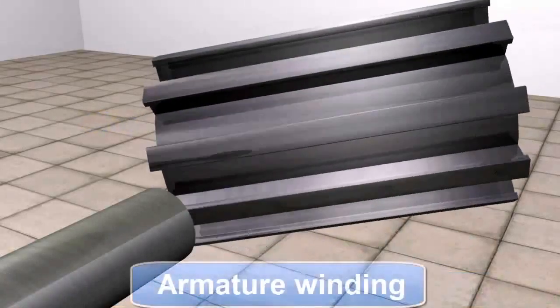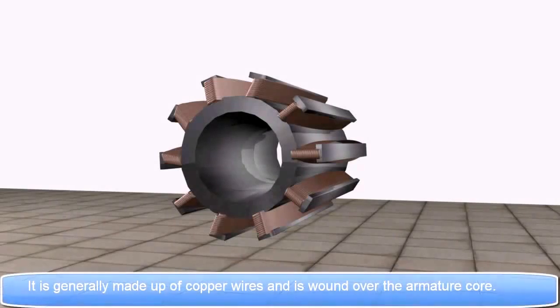Next is Armature Winding. It is generally made up of copper wires and is wound over the armature core.